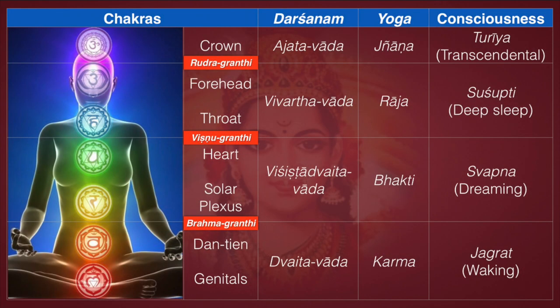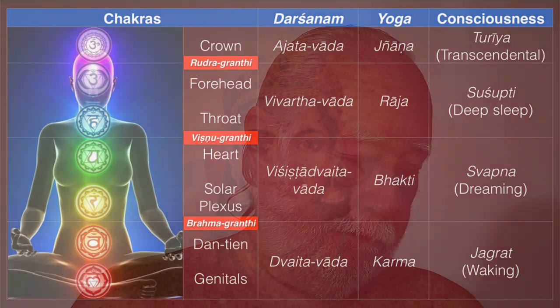And so I went back to the system that I developed based on the four stages of consciousness. Here they are once again. So we have Jagrat, Svapna, Sushupti, and Turiya — states of consciousness — and the yogas that go along with them: Karma, Bhakti, Raja, and Jnana. Then these are correlated with the philosophical views: Dvaita-Vada, Vishishtha Dvaita-Vada, Vivartavada, and Ajatavada. And then those are mapped to the chakras that support them.